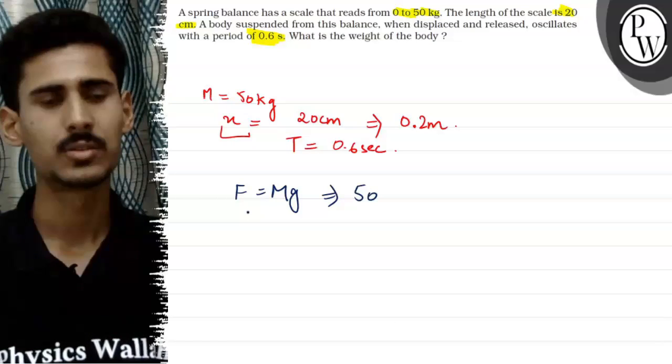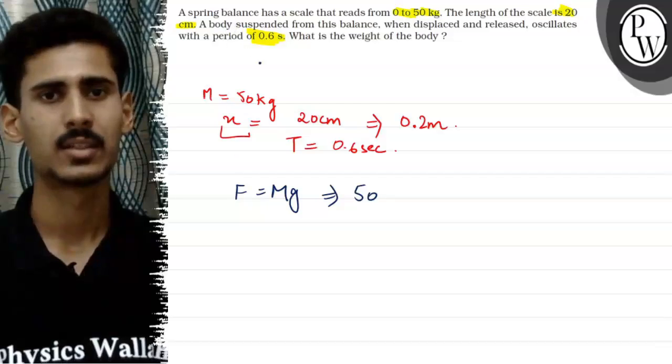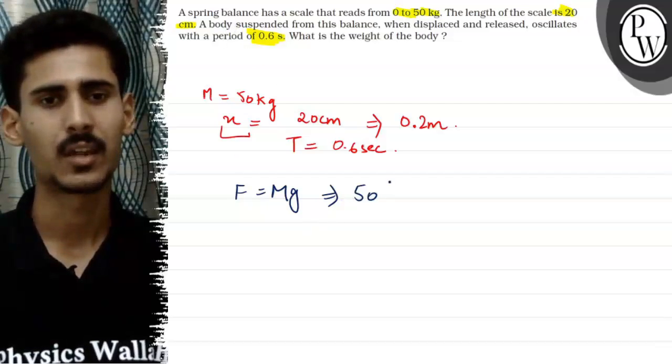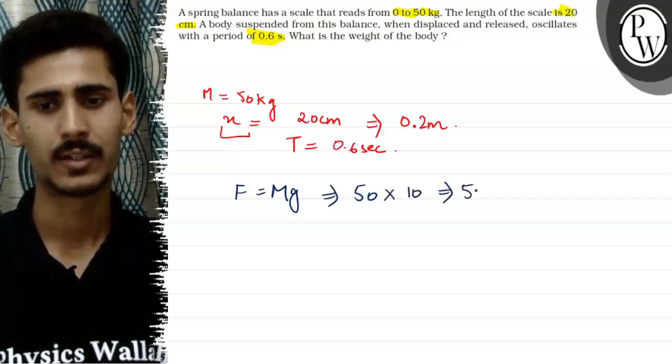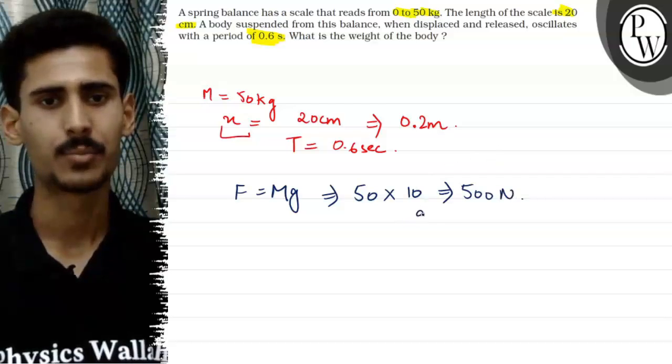So maximum force to exert that will be equal to 50 into 10, which is around 500 Newtons. If we take G to be 9.8 seconds, 9.8 meter per second square.